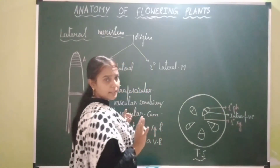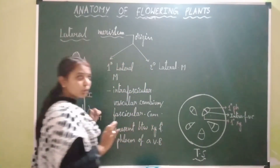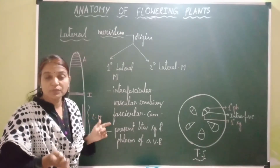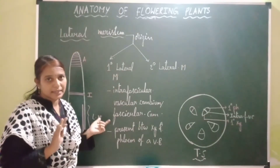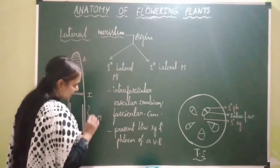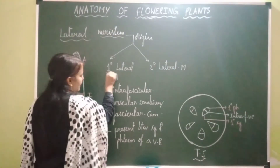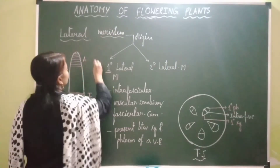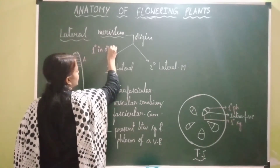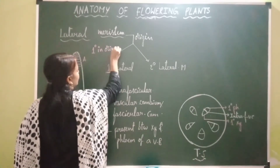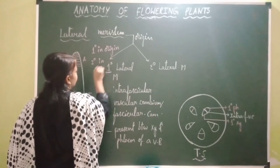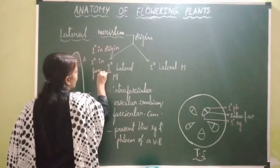This intrafascicular vascular cambium is primary in origin because it is present in the plant from the beginning of life. Though it is primary in origin, it is secondary in function because it is involved in the formation of secondary permanent tissues like secondary xylem and secondary phloem.